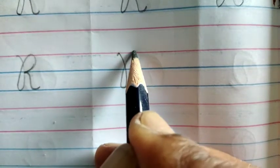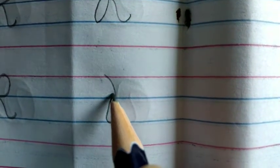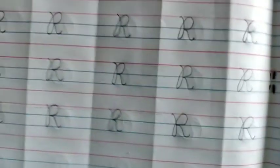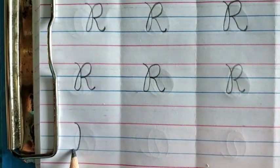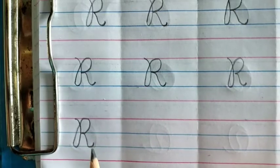Start from the red line, do like this, do like this and do like this. This is letter R. Then go up to touch the red line, make a half circle, join and do like this. This is letter R. Now, start from the red line, take a turn, make a half circle, make a slant line and take a little turn. This is letter R.